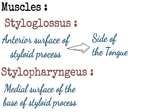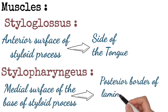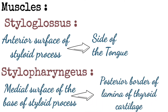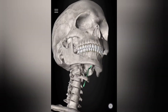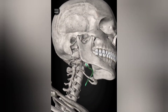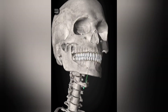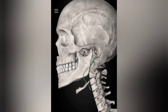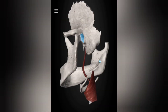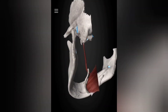Stylopharyngeus muscle. It arises from the medial surface of the base of the styloid process and is inserted on the posterior border of the lamina of the thyroid cartilage. Its attachments are the styloid process and the thyroid cartilage, which is a part of the pharynx.